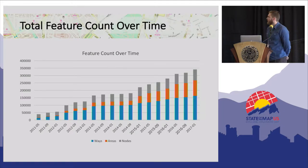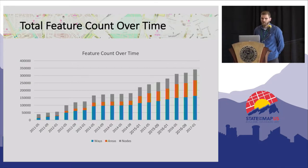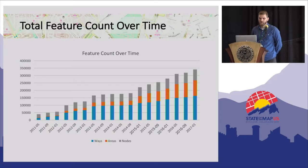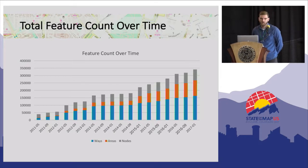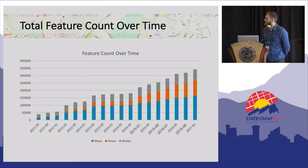On this graph we can see the steady increase in the number of features over time. Earlier on, a lot of the features added were ways, and later on there's a notable increase in the number of area features added. The graph also hints at periods of time when there were significant steps in the amounts of features added — May 2012 and May 2013 are examples of such steps.